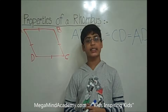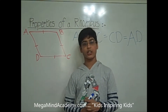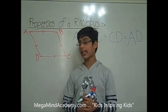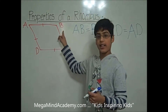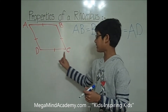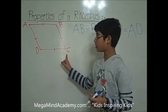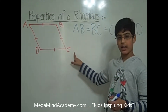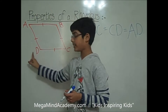The opposite sides are parallel to each other. So that means that side AB is parallel to side DC, and also side BC is parallel to side AD.